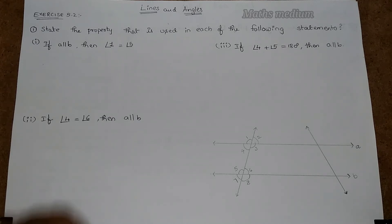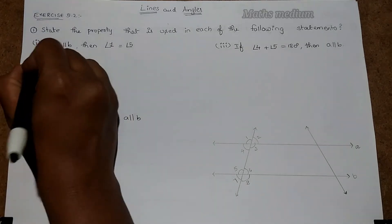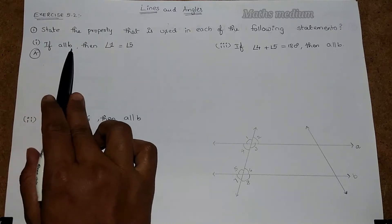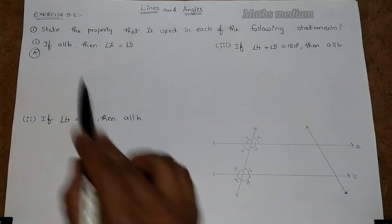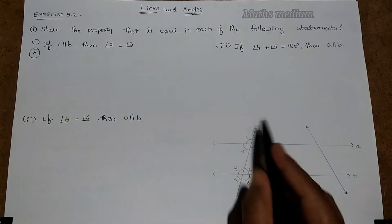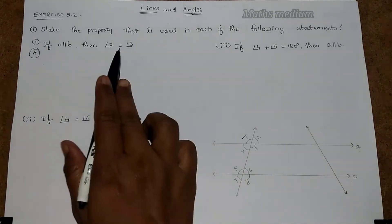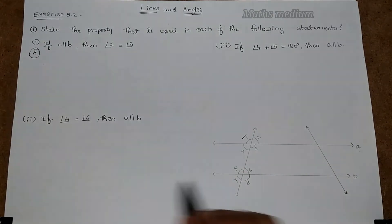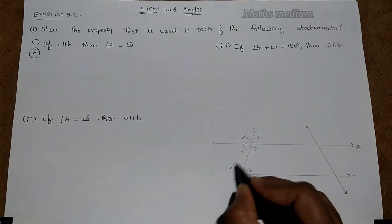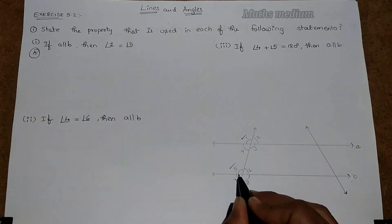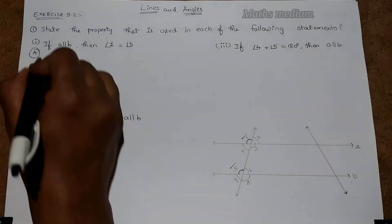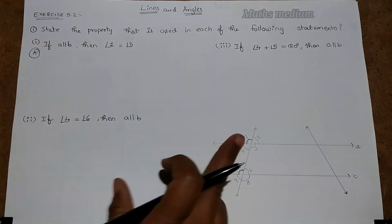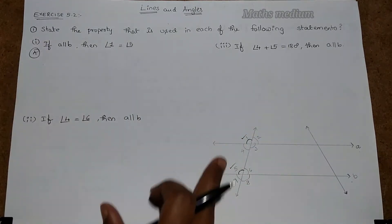Coming to the question: here if A is parallel to B, then angle 1 is equal to angle 5. We have to state the property. This is corresponding angles.